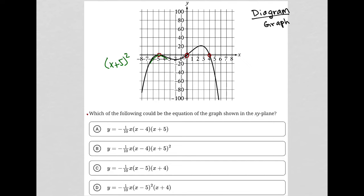So the question says, which of the following could be the equation of the graph shown in the xy-plane? Well, we've already kind of got started with that. So this represents this here. The origin, that would be just represented by x. And this would be represented by x minus 4. So altogether, I should have x and x minus 4 and x plus 5 squared involved for sure.